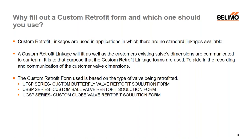Custom retrofit linkages are used in applications where there's no standard linkage available. A custom retrofit linkage will only fit as well as the customer's existing valve dimensions are communicated — that's why we have the custom retrofit form. It helps to record and communicate the customer valve dimensions. There are three custom retrofit forms: the UFSP for butterfly valves, the UVSP for ball valves, and the UGSP for globe valves.